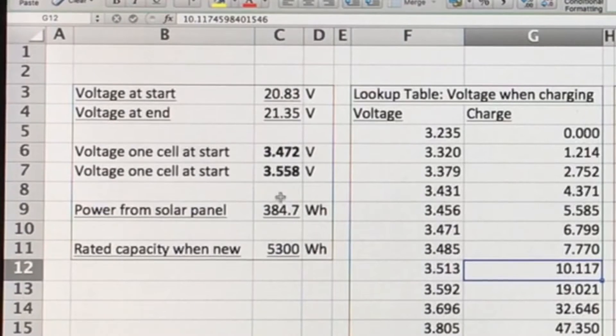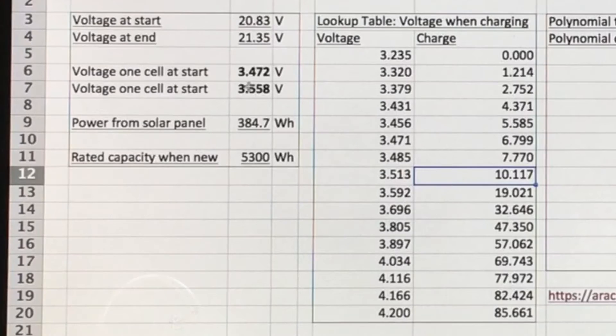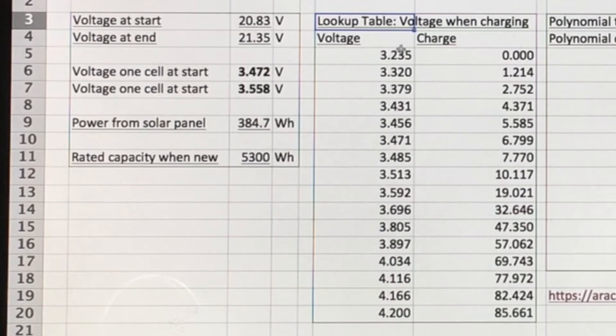Then you know the power from the solar panel and the rated capacity of the battery. Then we have to work out what each of these voltages corresponds to in terms of how charged the battery is. And you use a lookup table for that.